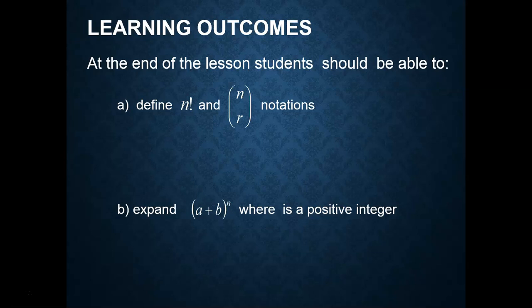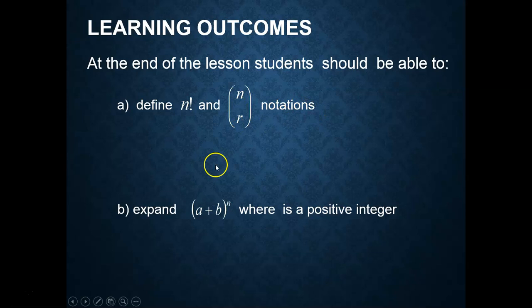At this part of the lecture, you are going to learn to define n factorial — this exclamation mark sign, also called the factorial sign. You are going to be using n choose r notation, and you're going to learn how to expand (a + b) to the power of n, where n is a positive integer, whether more than or equal to 1 or less than or equal to 1.